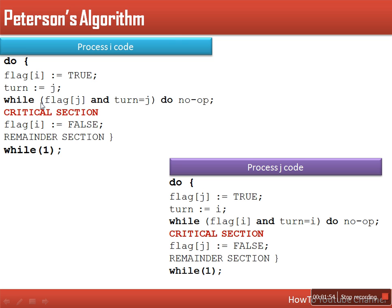Now this while loop: if this condition is true — like if another process is also wishing to enter its critical section — then flag[j] will also be true because that process also set this variable to true. And if turn is also equal to j, meaning this process set turn to j before another process set it to i, then if both conditions are true, this loop becomes an infinite loop, keep on checking the condition again and again.